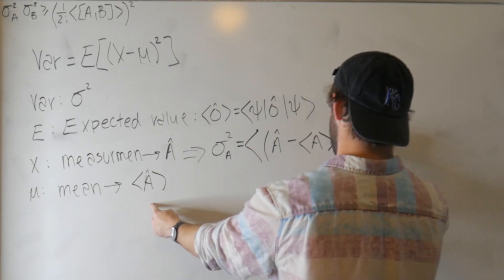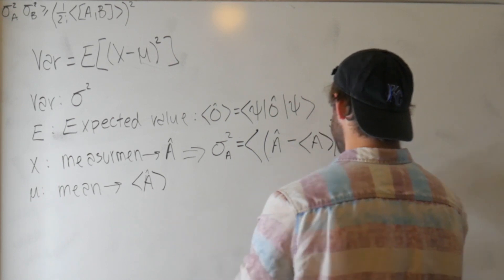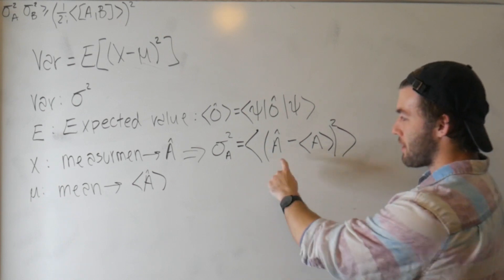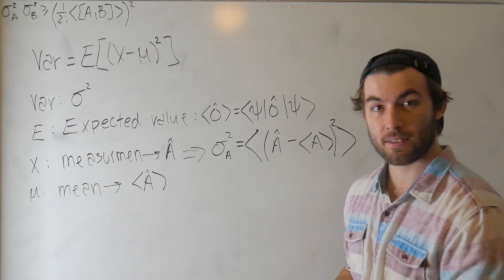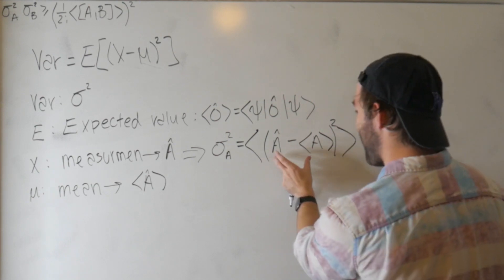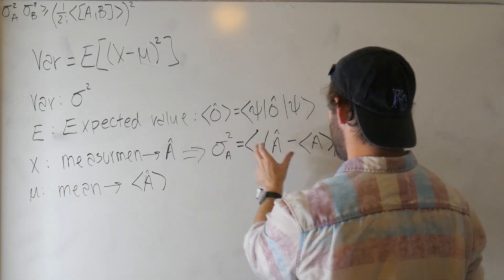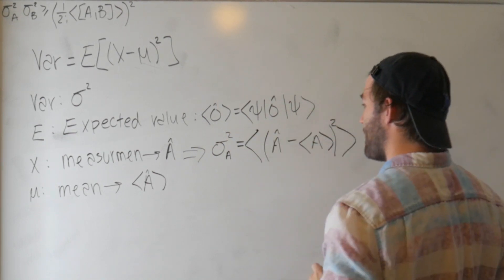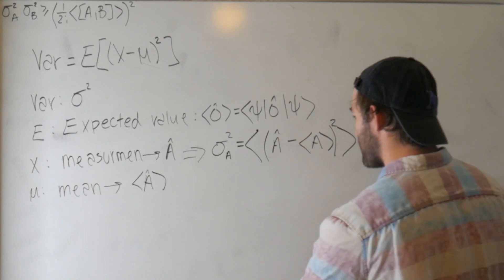Substituting everything in, we get that sigma squared sub A is equal to the expectation value of the operator (A minus the expectation value of A) squared. At first glance it looks weird to have an operator minus a number, but you have to think of this whole thing as the operator O being sandwiched between two states psi.